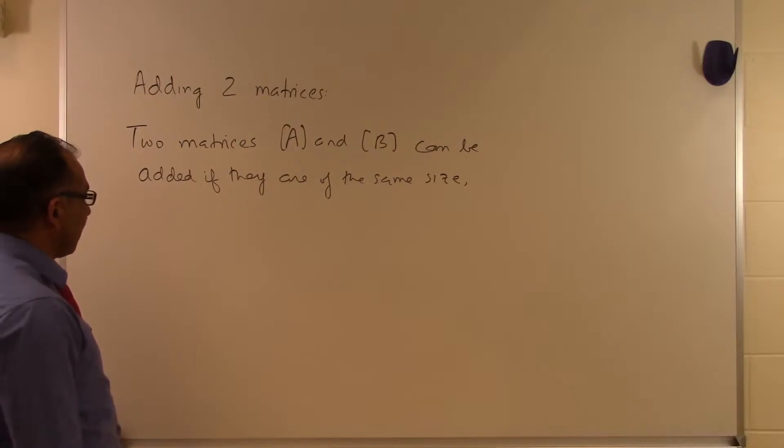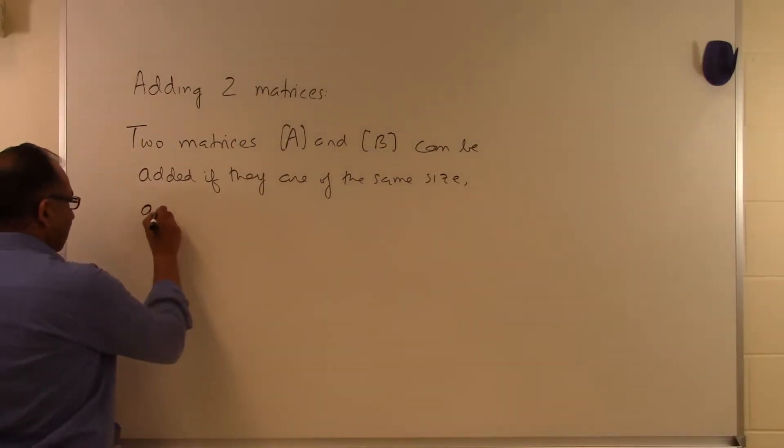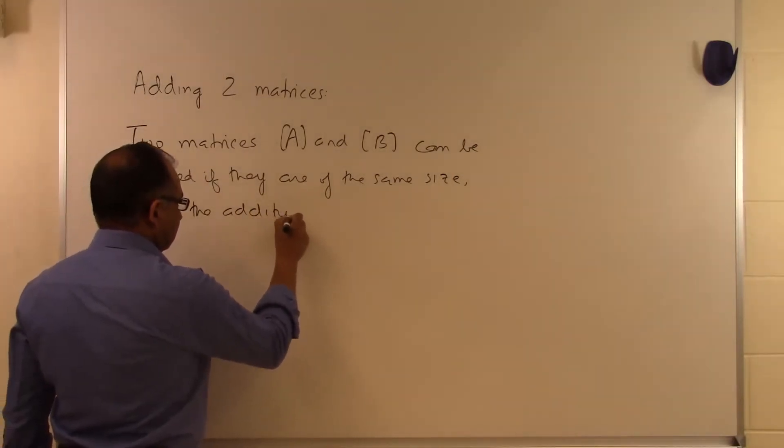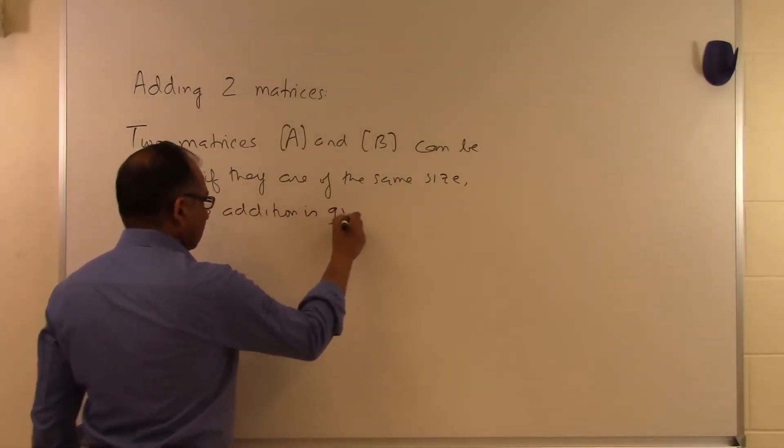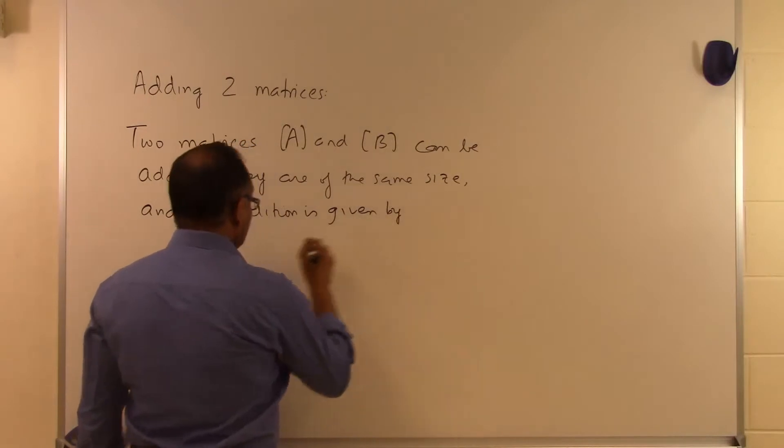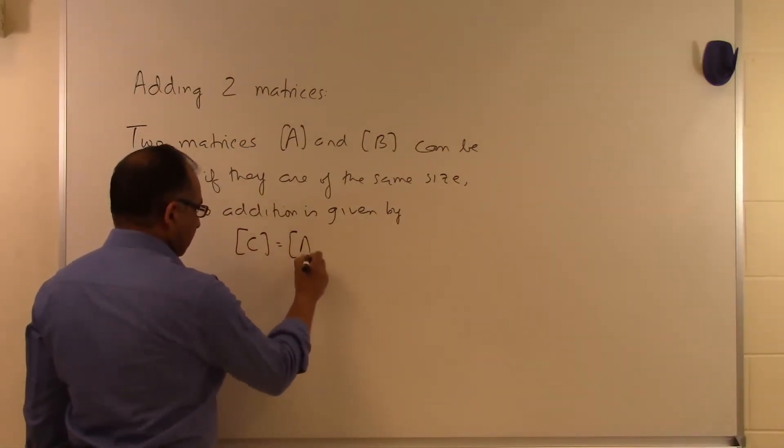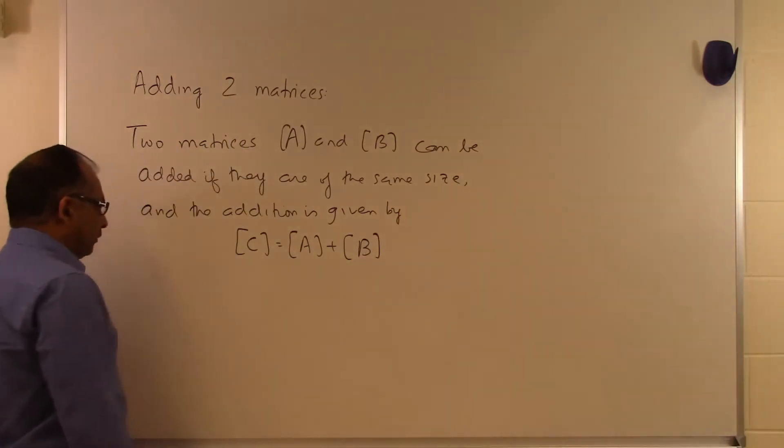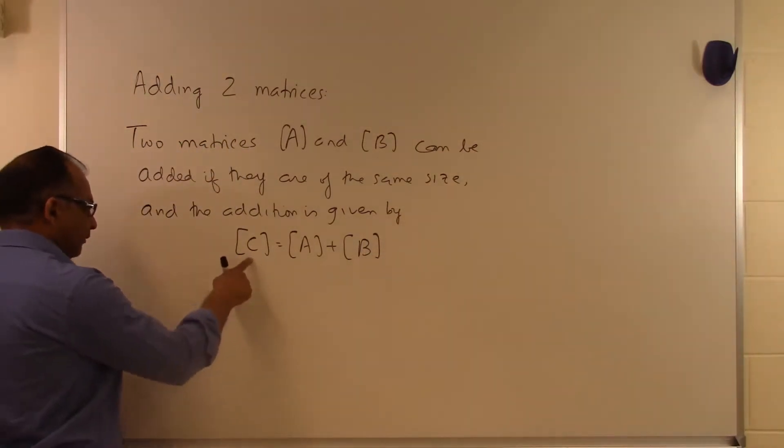Two matrices A and B can be added if they are the same size, and the addition is given by C equals A plus B. What does this mean for how we get the value of C?